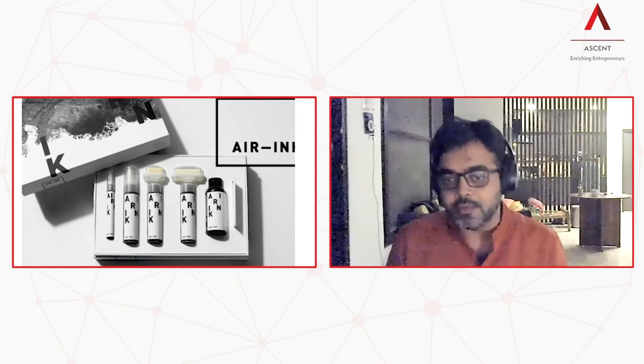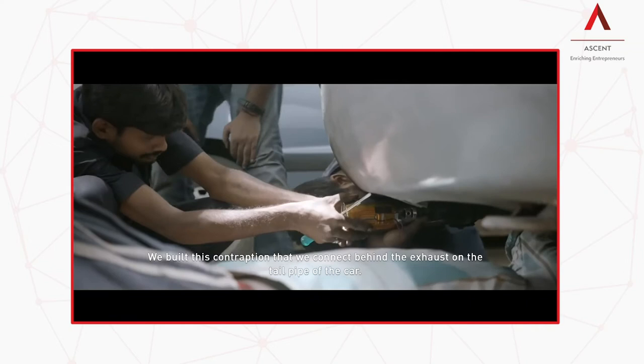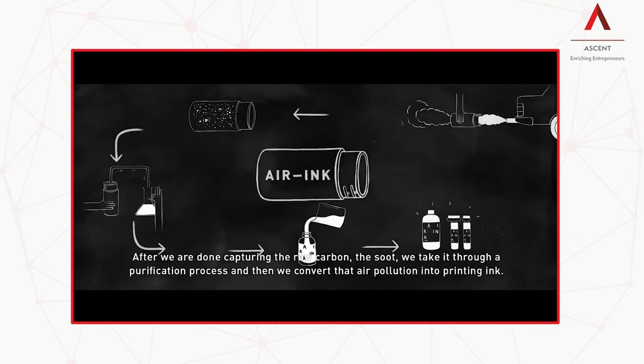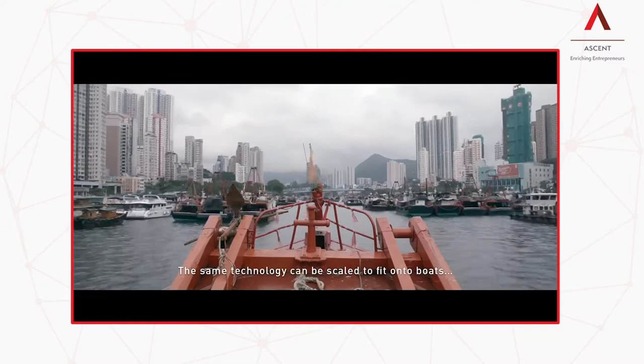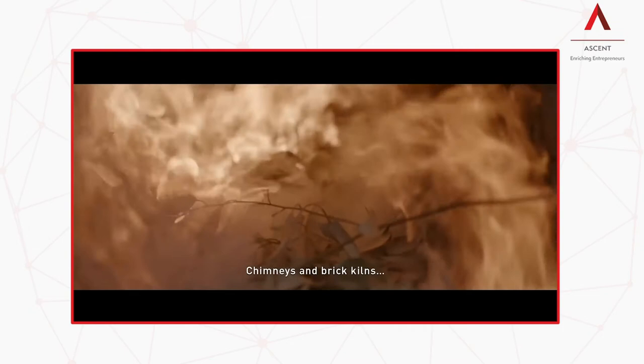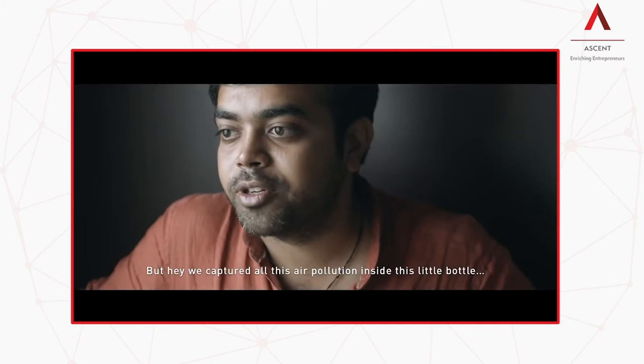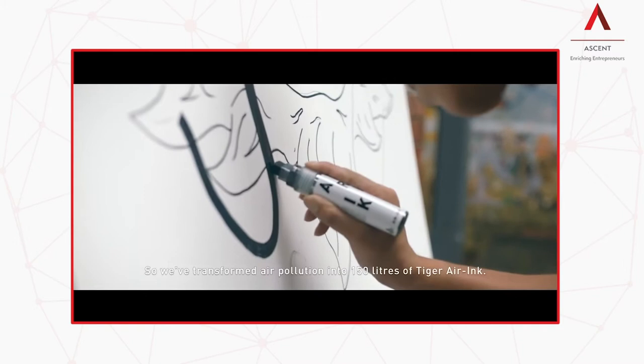Let me show you the video. We built this contraption that we connect behind the exhaust in the tailpipe of the car. After we are done capturing the raw carbon, the soot, we take it through a purification process and then convert that air pollution into printing ink. The same technology can be scaled to fit onto boats, chimneys, brick kilns, and cranes. We've captured all this air pollution inside this little bottle and now you can paint with this. We've transformed air pollution into 150 liters of Tiger Air Ink.